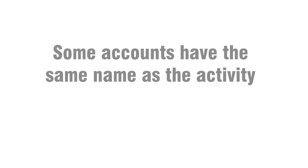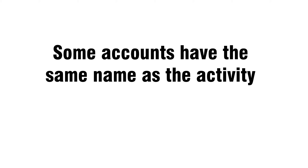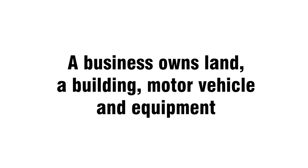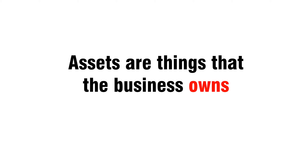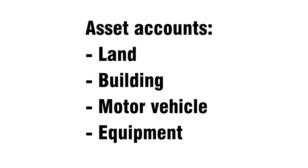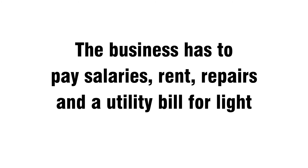Some accounts have the same name as the activity. A business owns land, a building, motor vehicle, and equipment. Assets are things that the business owns. Asset accounts include land, building, motor vehicle, and equipment.